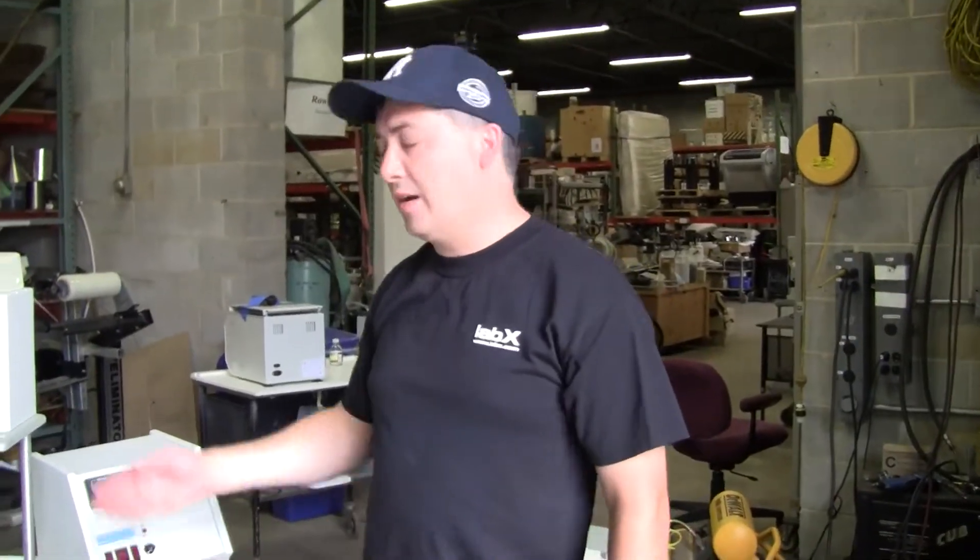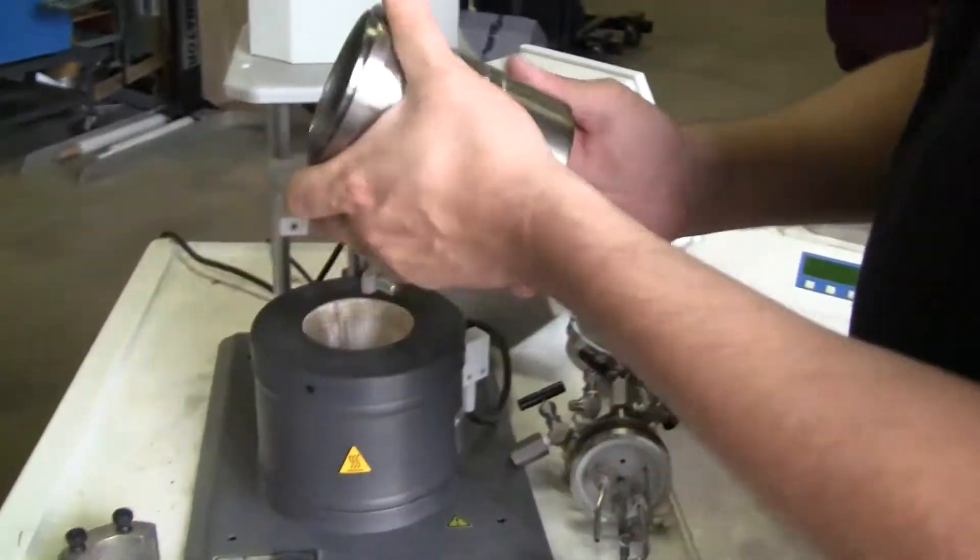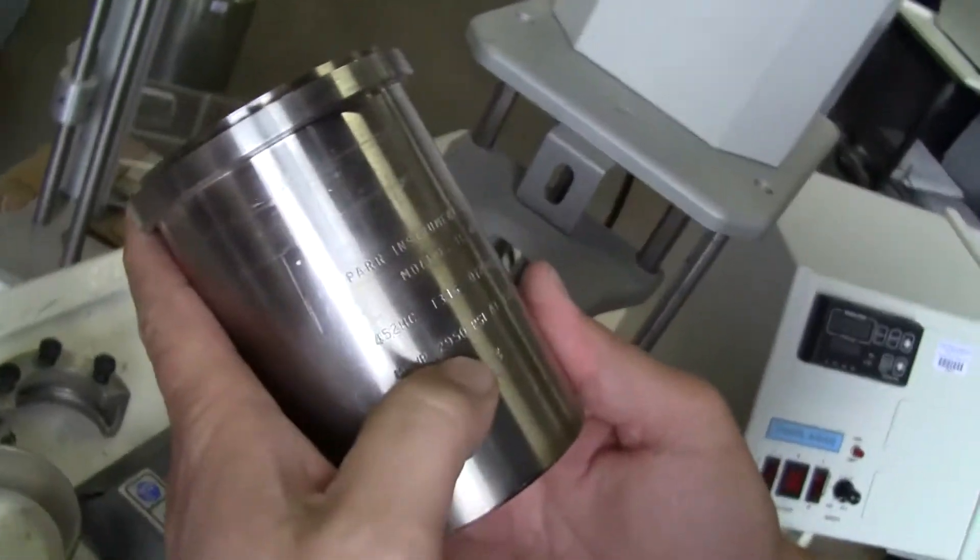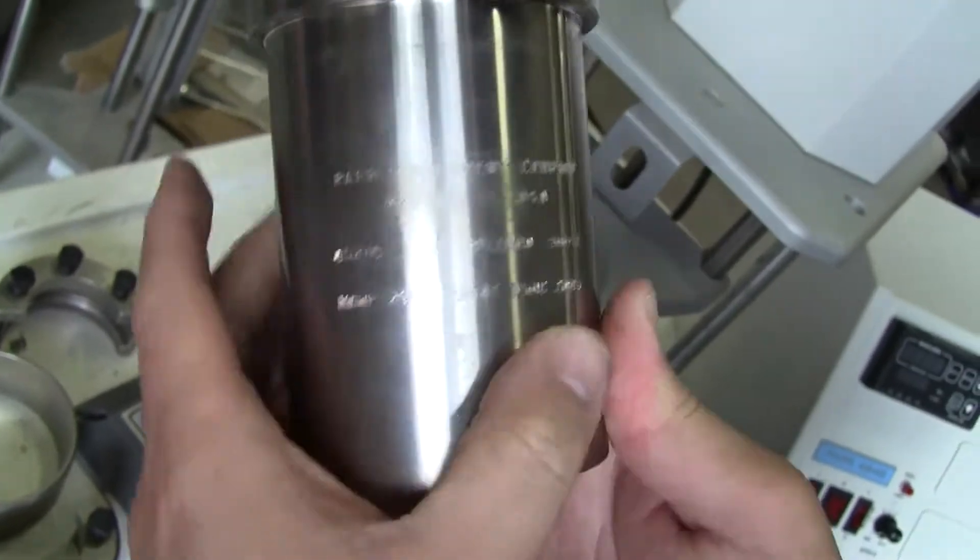Hi, this is Michael Natow from Hi-Tech Trader. Today we're looking at a PAR reactor. This little PAR reactor goes up to about 2,900 psi and at 350 degrees C.